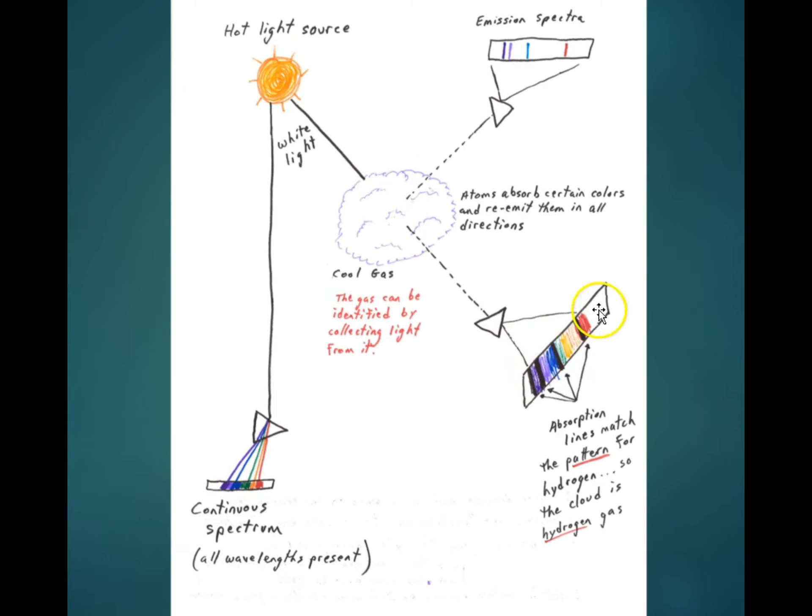So absorption spectroscopy can help astronomers identify the composition of things in the universe, from clouds of gas to stars to entire galaxies. It can also be used to determine the relative motion of things in the universe, as we'll see.